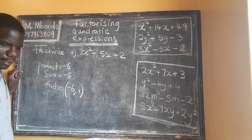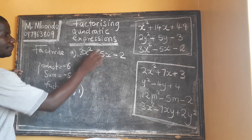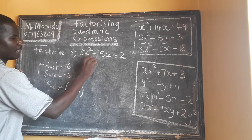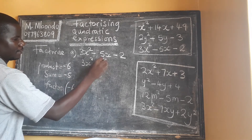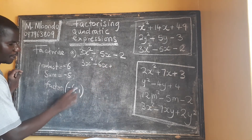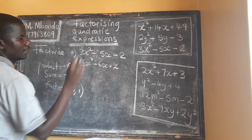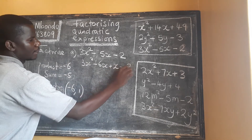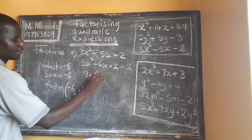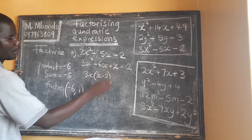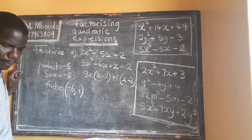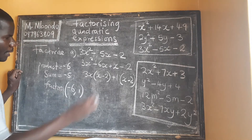We expand the sum using the factors: 3x² − 6x + x − 2. Then we factorize. What is common in the first two terms is 3x, giving us 3x(x − 2). What is common in the last two terms is positive 1, giving us +1(x − 2). So the final answer is (3x + 1)(x − 2).